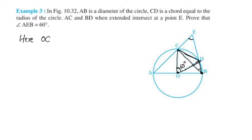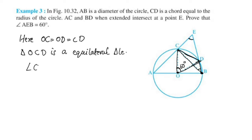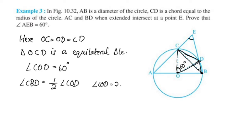Since OC equals OD equals CD, triangle COD is equilateral. Therefore angle COD equals angle CBD, and angle CBD equals half of COD, which is 30 degrees.